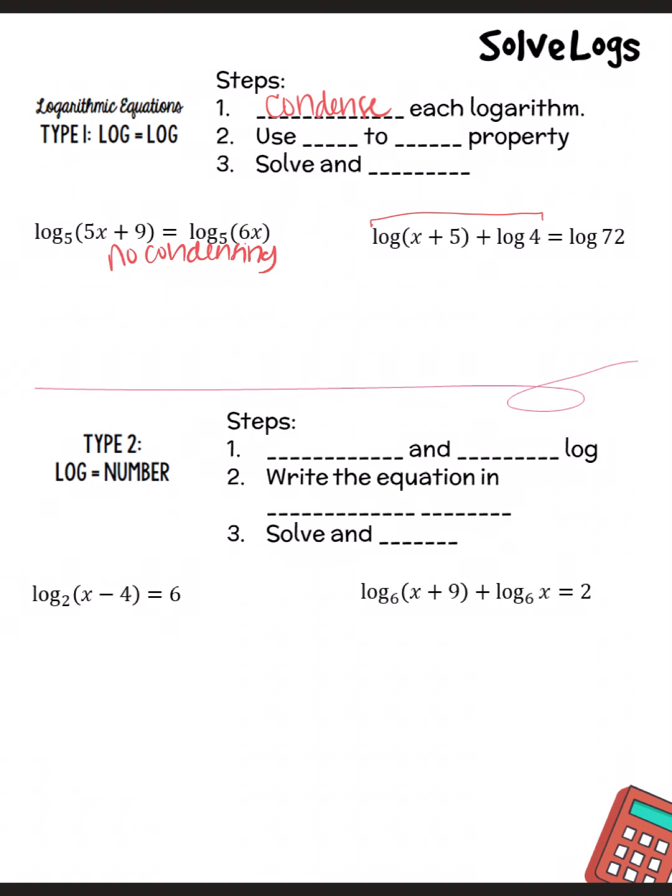Once we condense it, we can use the one-to-one property, which says that if we've got log base B of M equaling log base B of N, then M equals N. After we do, we're going to solve and check.